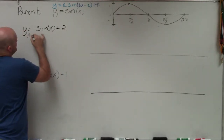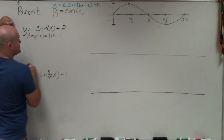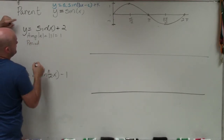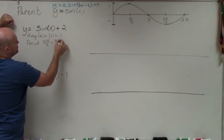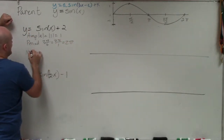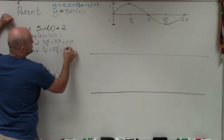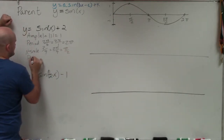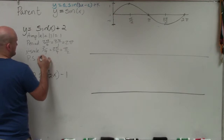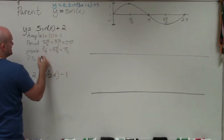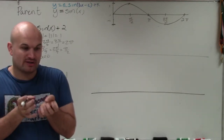First, let's determine our amplitude. Amplitude is the absolute value of a, where a is what's multiplied by your function — in this case it's 1, so amplitude is 1. Our period is 2π divided by b, where b is what's multiplied by x inside your function — in this case b is 1, so period is 2π. Our x-scale is period divided by 4, so that's 2π over 4, which is π/2. The phase shift is found by setting what's inside the function equal to 0, so x equals 0 — meaning our initial period starts at 0.